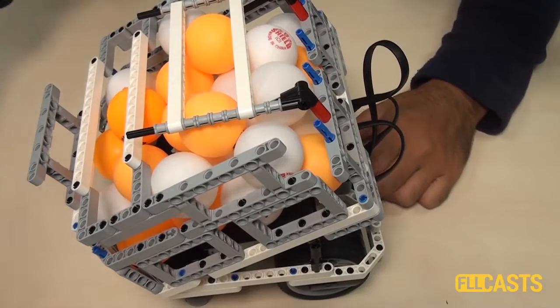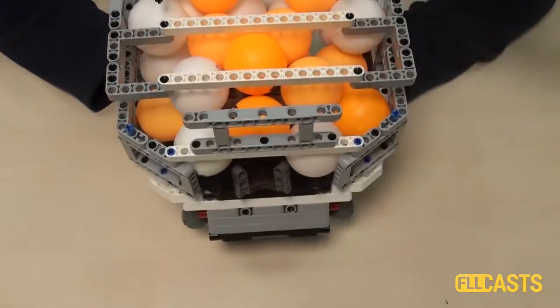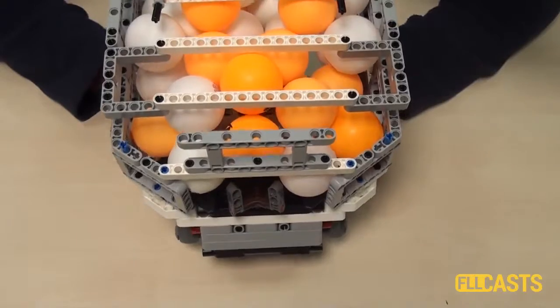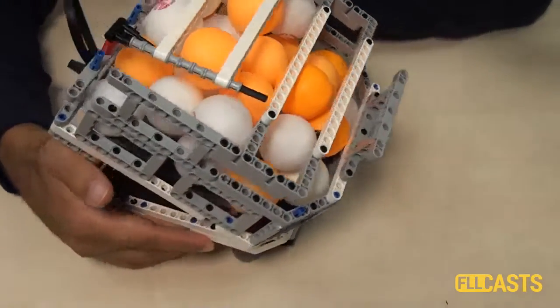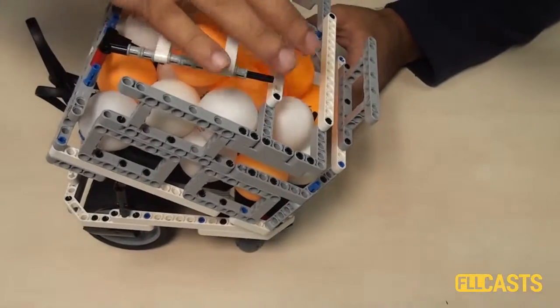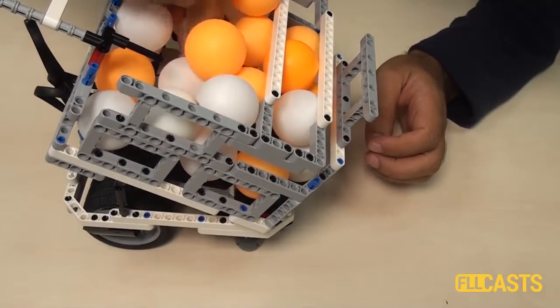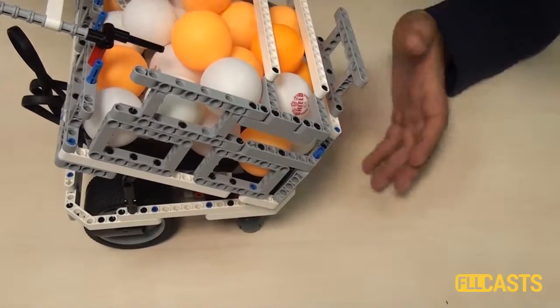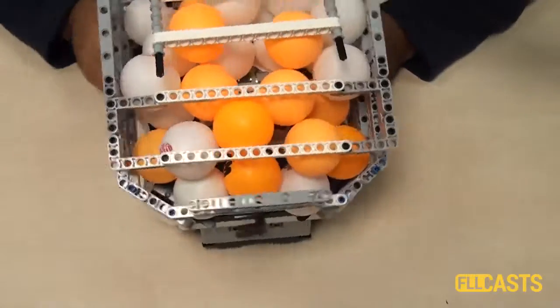The idea is that we move on the field with the motor at the front of the robot, and when the motor turns, probably some of the balls will fall on the field. But as you'll now see, this doesn't quite work. Let me just start the program. Now it's moving.